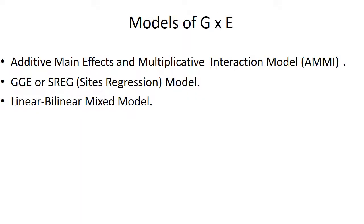Different models of G×E interaction are very important when going with multi-environment or multi-seasonal trials. The first and very famous model is the Additive Main Effect and Multiplicative Interaction model, basically called the AMMI model. The second is the Sites Regression or GGE model — the SREG model. The third is the linear bilinear mixed model.